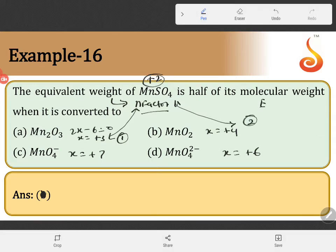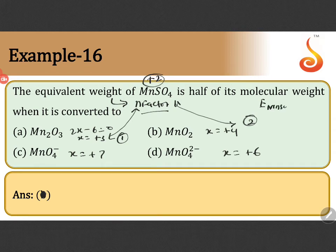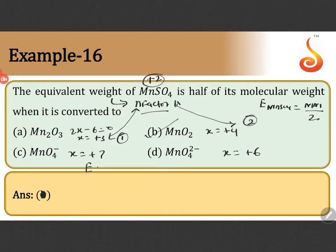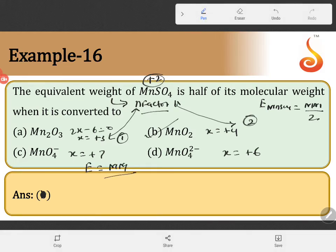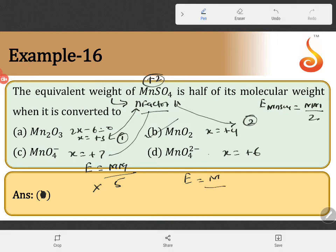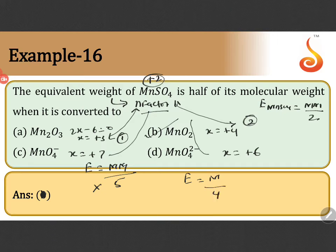Therefore, here equivalent weight of MnO₂ is equal to molar mass by N factor. So this will be the answer. Here if you take equivalent mass is equal to molar mass by change in the oxidation state, 7 minus 2, you will get 5. This is not the answer. Here equivalent mass is equal to molar mass divided by 6 minus 2, you will get 4. Therefore, this is also not the answer.